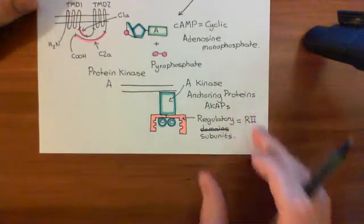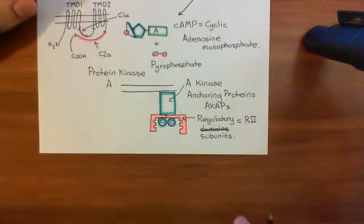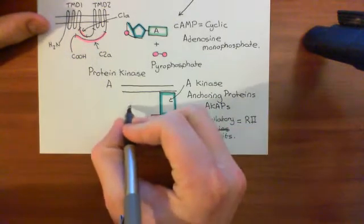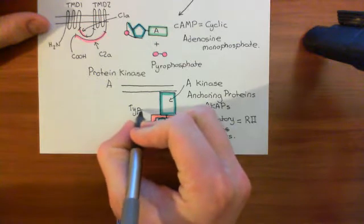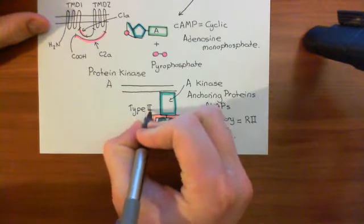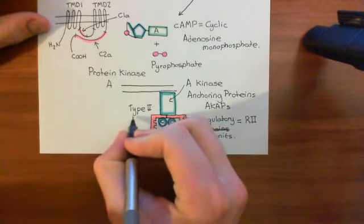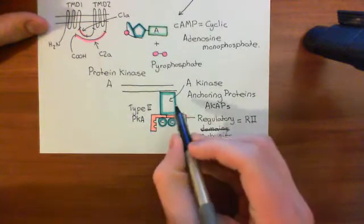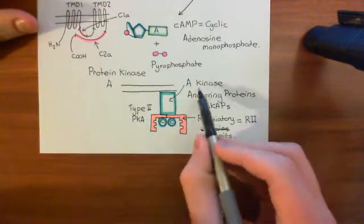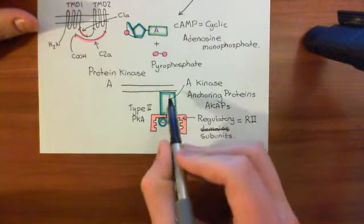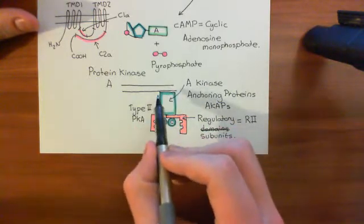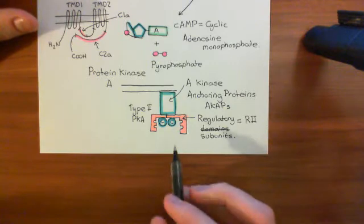We're currently discussing protein kinase A, of which there are two forms. There is type 2 protein kinase A, which I'll abbreviate to PKA — type 2 PKA — which is the form of protein kinase A that is anchored to A kinase anchoring proteins, which themselves are bound to the plasma membrane.